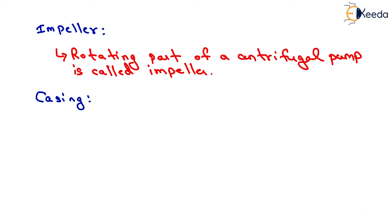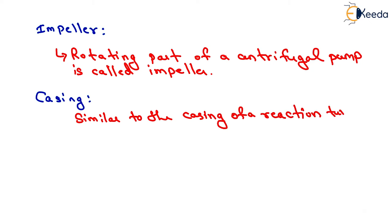The casing of a centrifugal pump is similar to the casing of a reaction turbine. It is an airtight passage surrounding the impeller, designed in such a way that the kinetic energy of the water discharged at the outlet of the impeller is converted into pressure energy before the water leaves the casing and enters the delivery pipe.